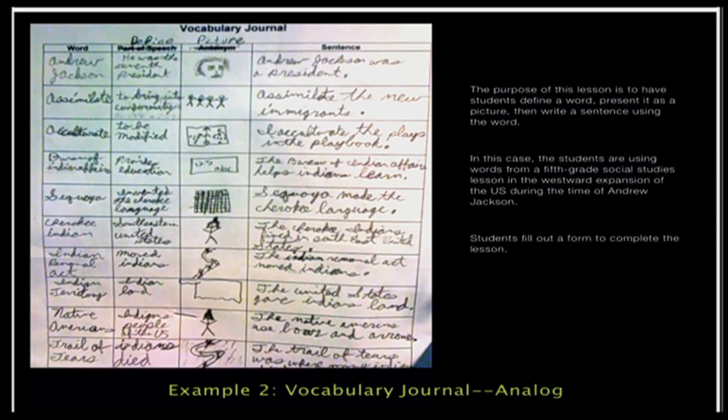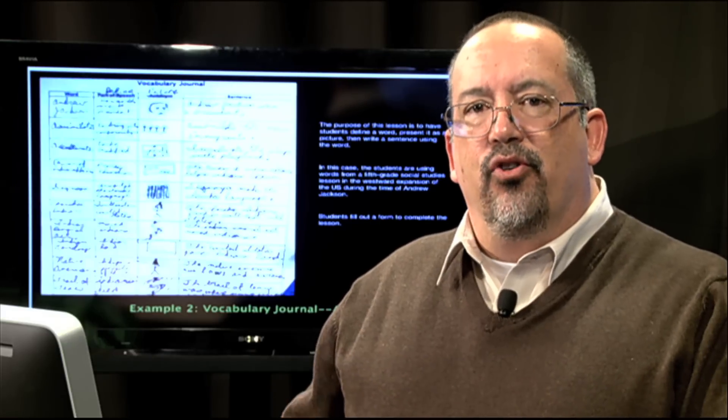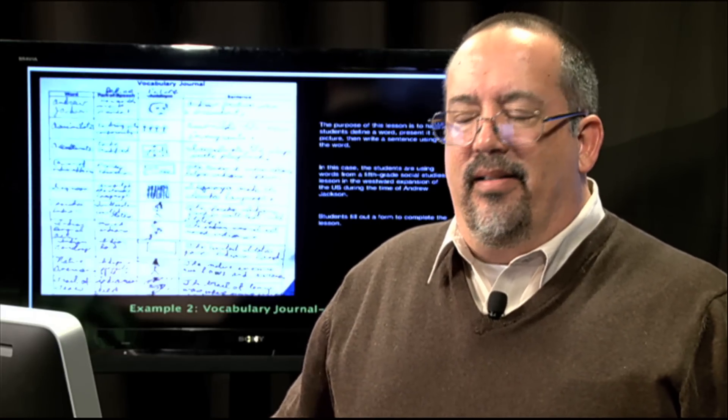The student had to go through maybe 10, 15 words. They're obviously doing a unit on this time in American history. So, essentially, the student's filling out a form and handing it in. That's the analog paper-pencil version of the lesson.